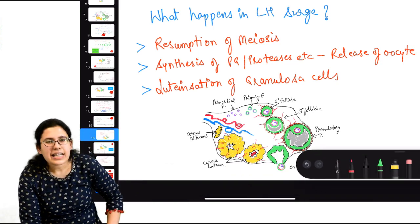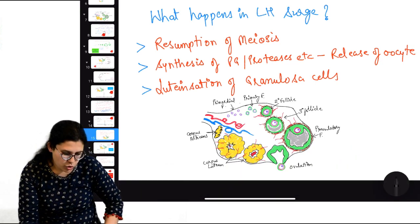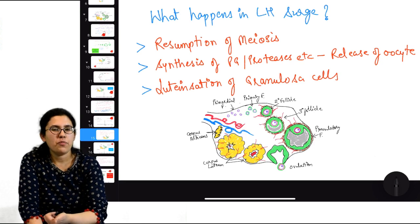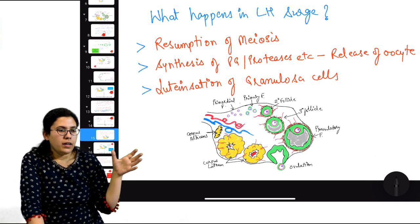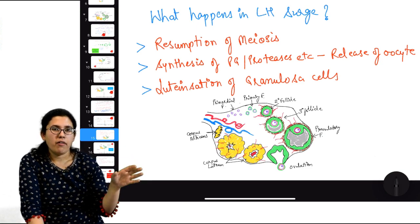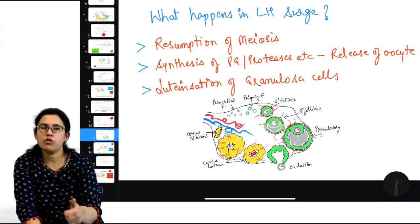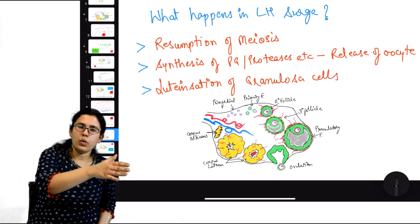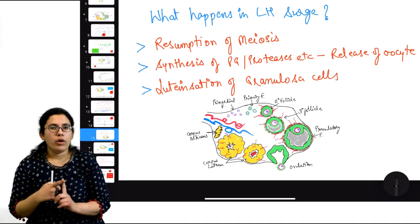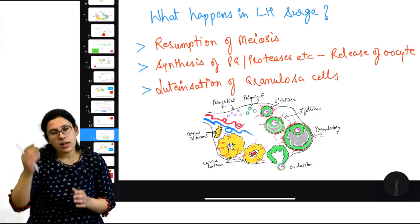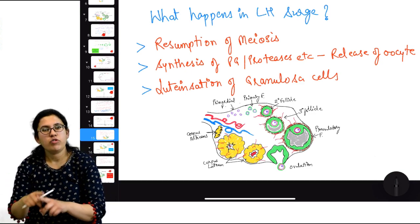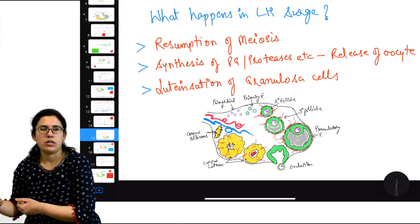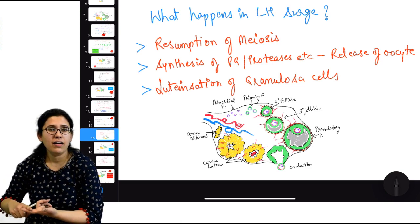What happens during LH surge? First, it causes resumption of meiosis. Primary oocytes were frozen at diplotene stage of prophase 1 — when LH surge comes, meiosis 1 resumes, there is ovulation, the first polar body is ejected, and the secondary oocyte is formed — a haploid cell ready for fertilization. But again it freezes at metaphase 2.